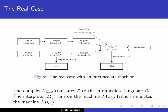If we look at the figure for the real case, we have a program written in the source language L. We have a compiler that compiles the source language to LI, which is the intermediate language. After the compilation step, we have a program written in the intermediate language, and we can run the compiler on some abstract machine MA. Once we have the program in this intermediate language, we use the abstract machine for the intermediate language to execute the program.